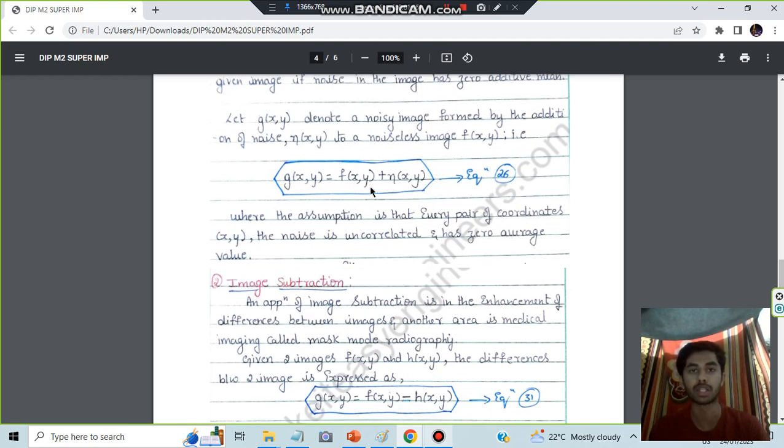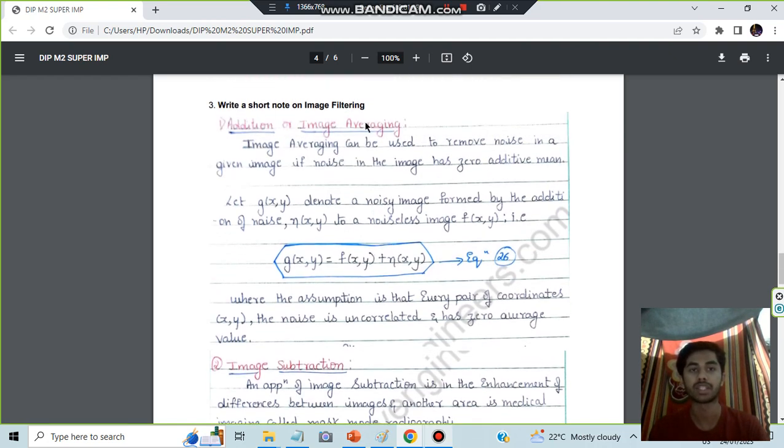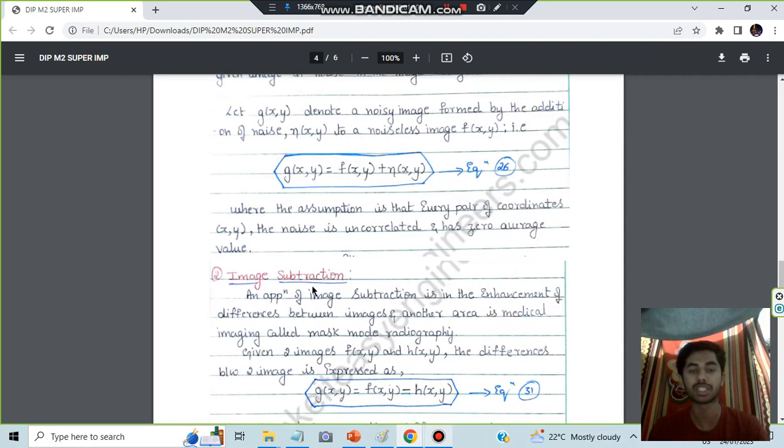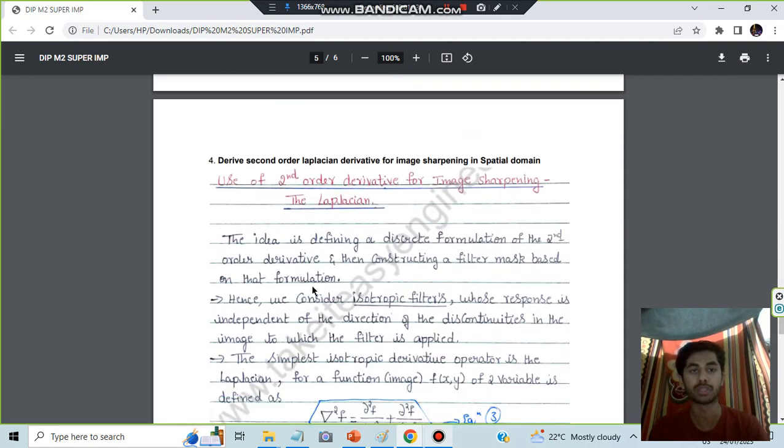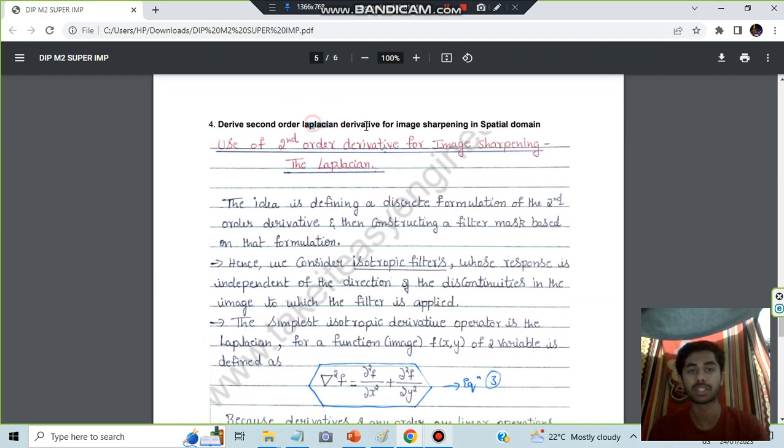The addition is image averaging, that's the first one. Second is the image subtraction. Moving on, we have the fourth question, which is the derivation here: Laplacian derivative for image sharpening in the spatial domain.